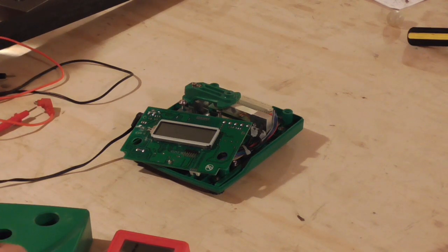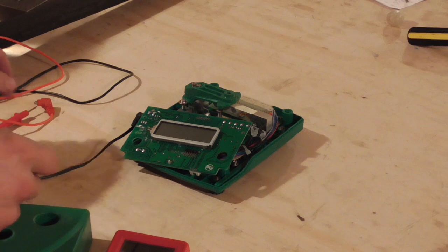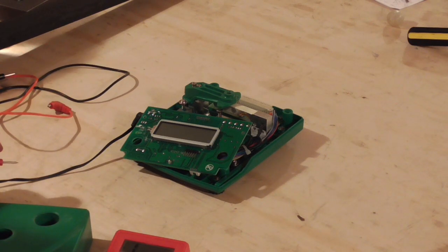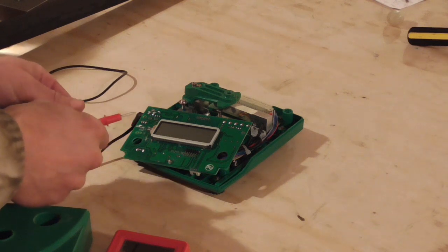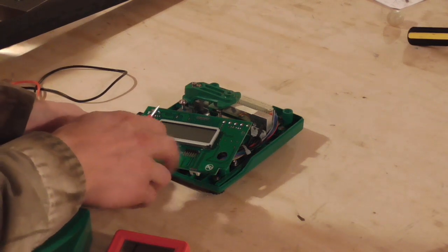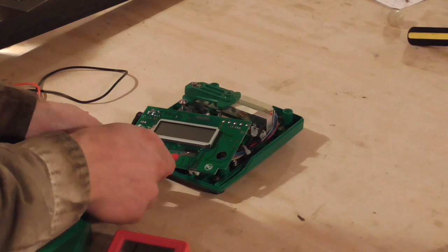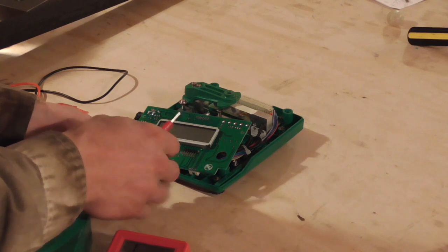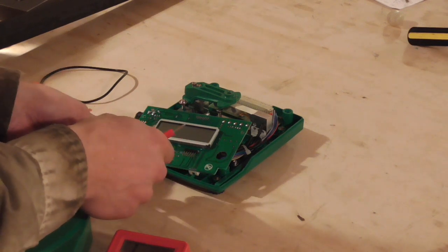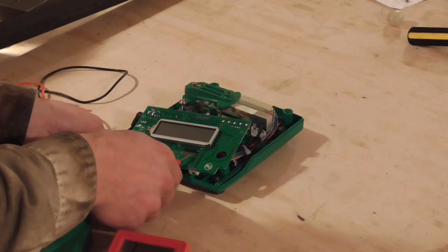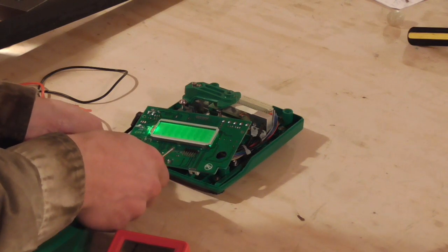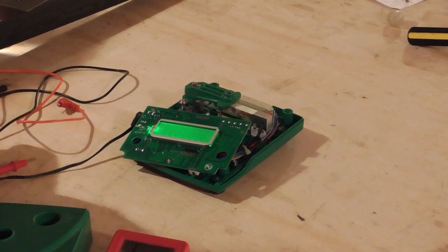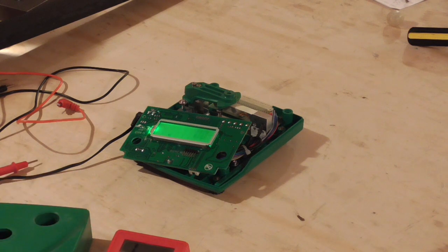But while I've got it apart I want to test one more thing just to see if I can confirm my understanding of these contacts and how the button works. So if I'm right then the signal to turn it on should equate to connecting these two pins on the right together. So this probe isn't connected to anything but of course it's conductive. So if I just short between those two pins the scale turns itself on.